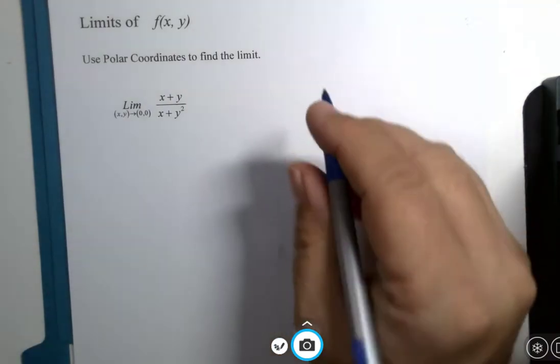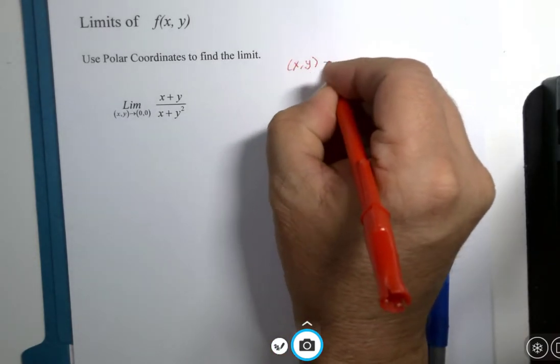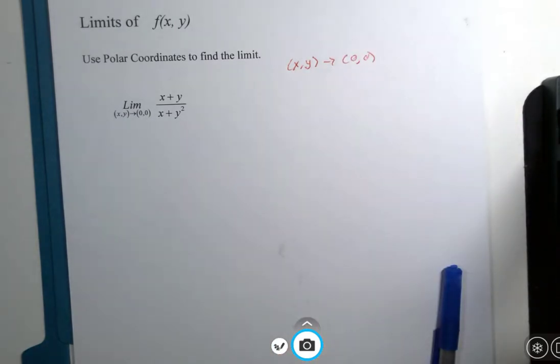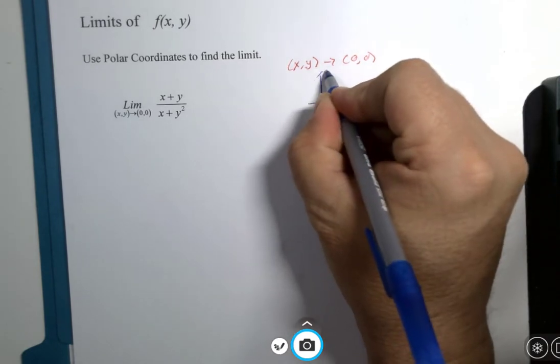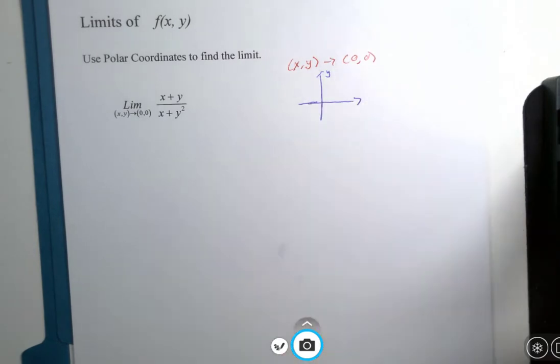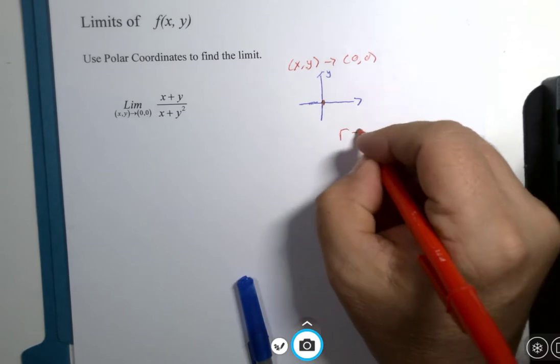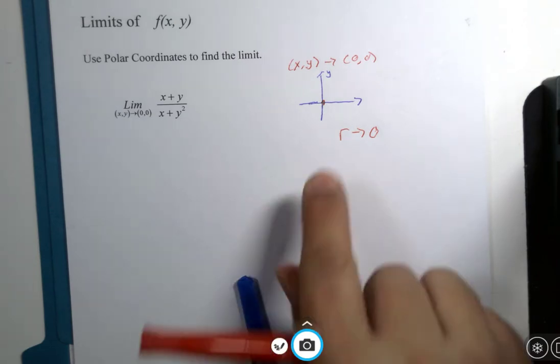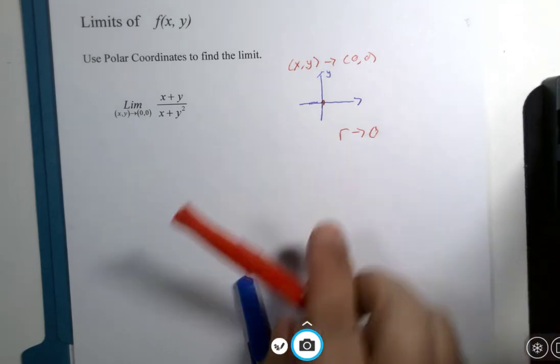The concept is if x and y are approaching the origin, then that means on the graph the radius is zero, or r is zero. And this allows us to take a two variable limit and work it down to a one variable limit.